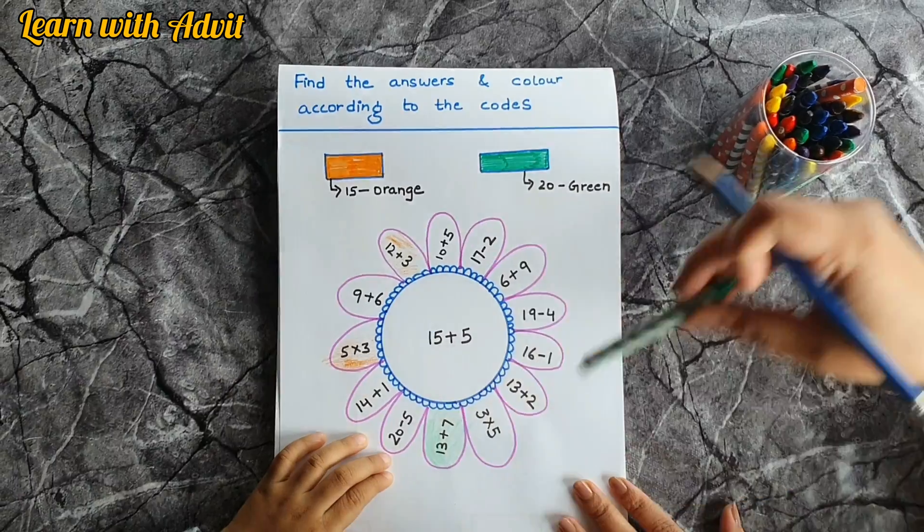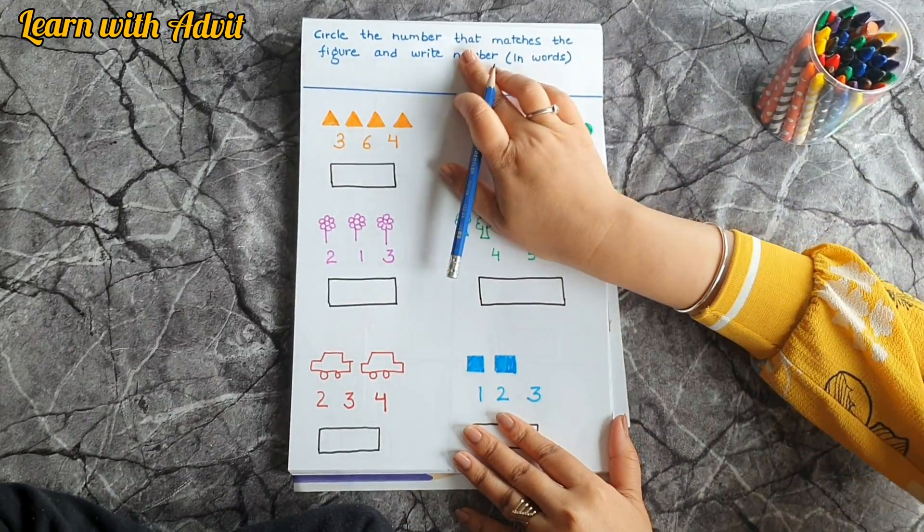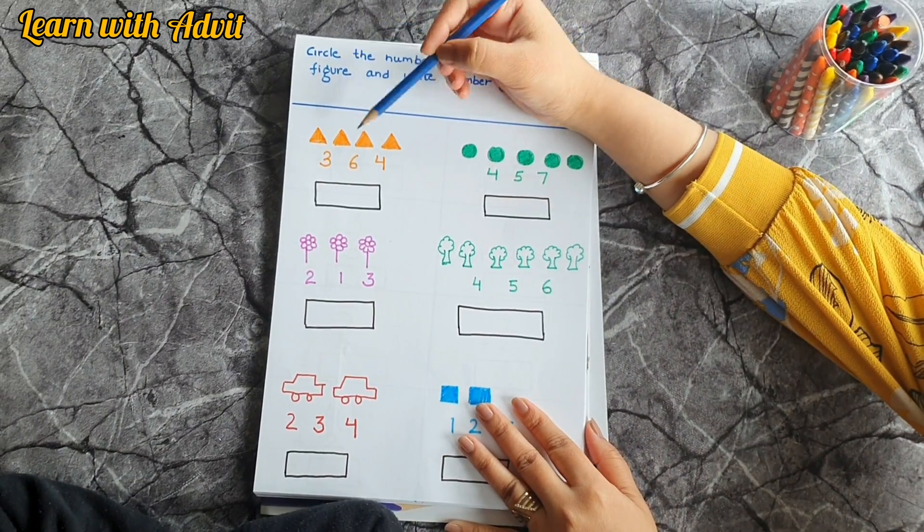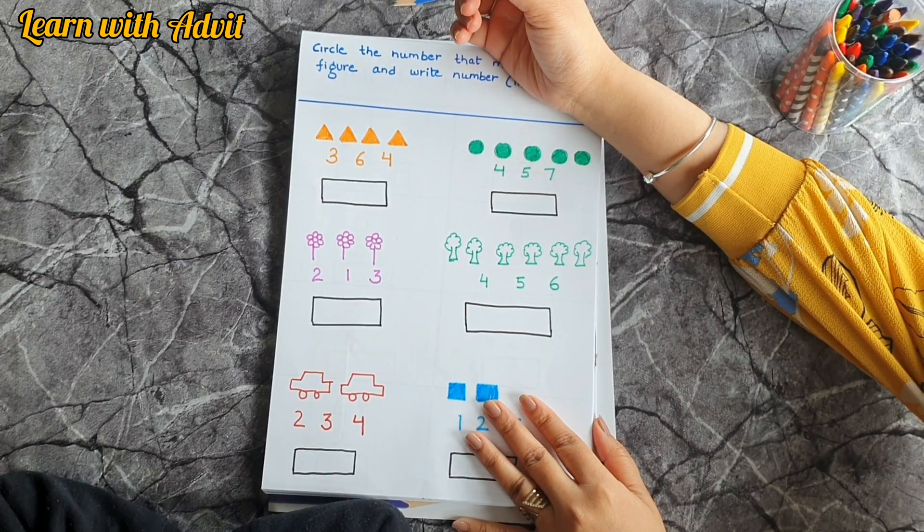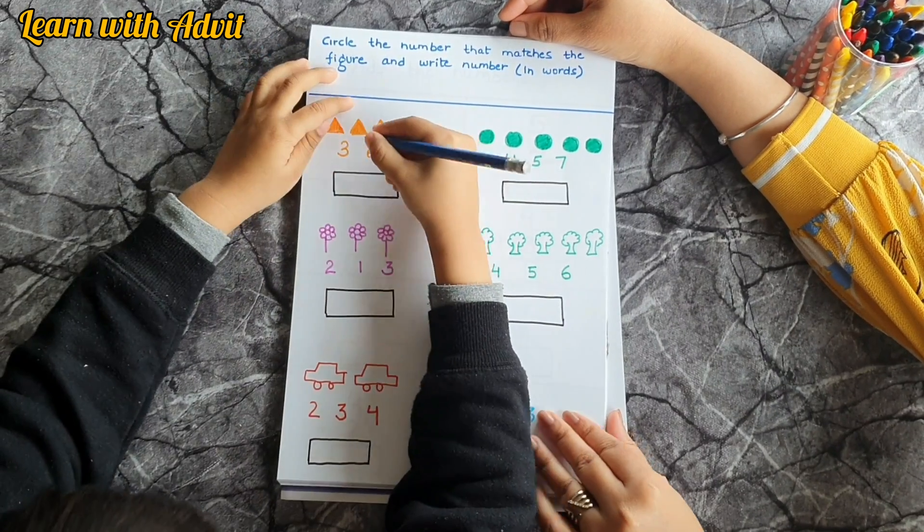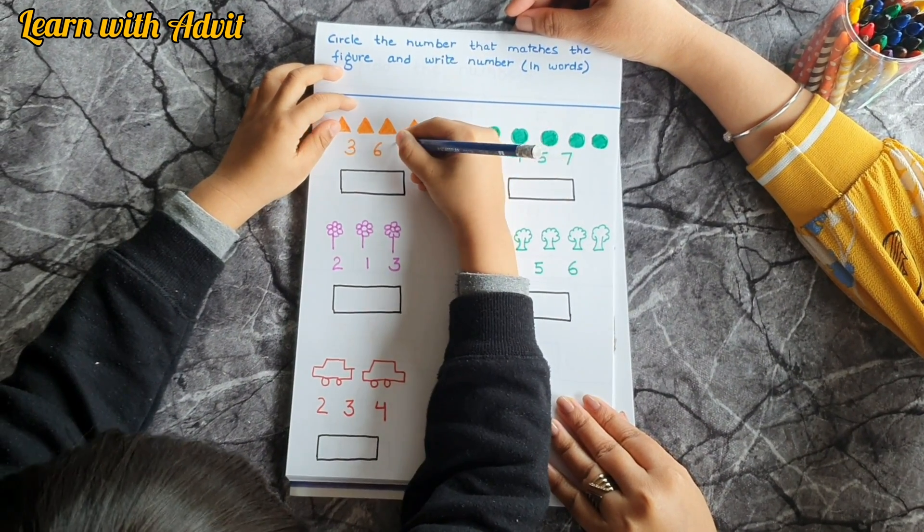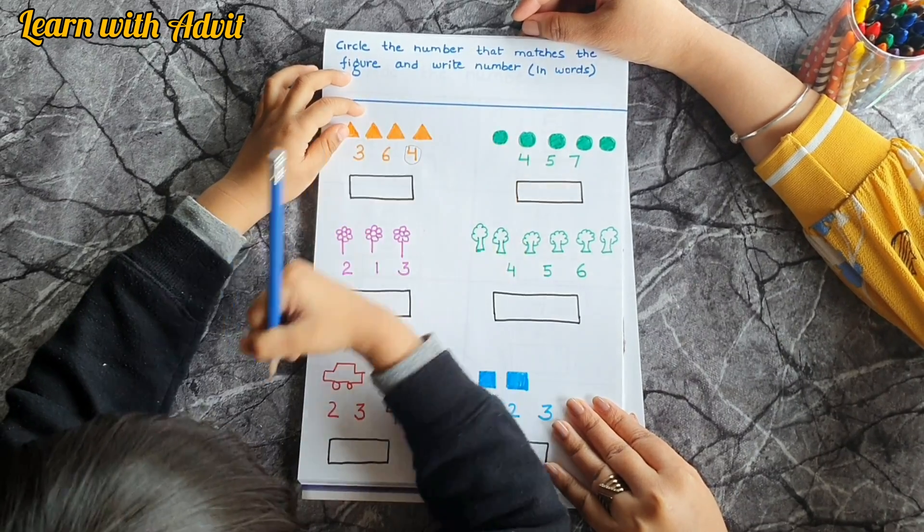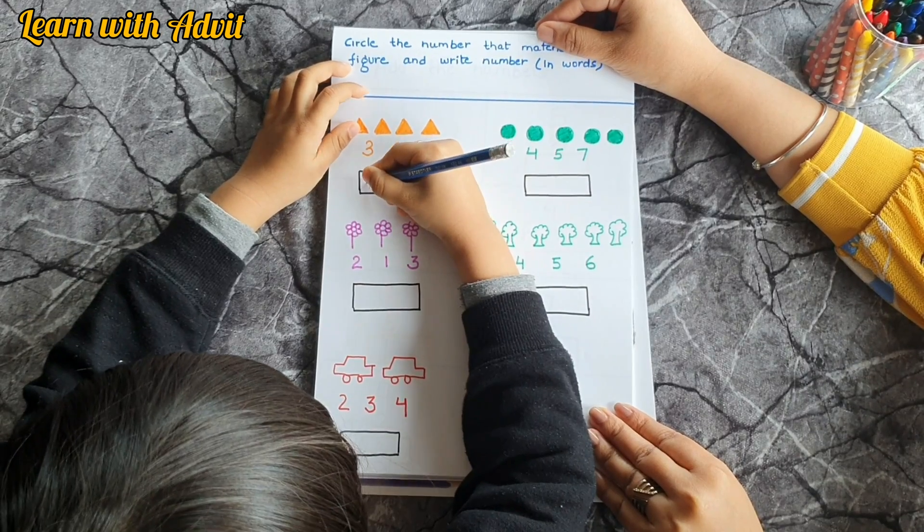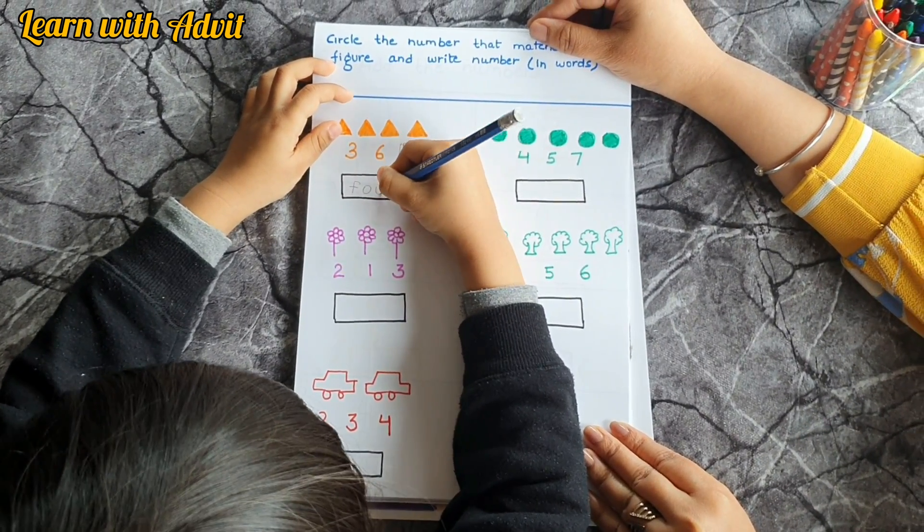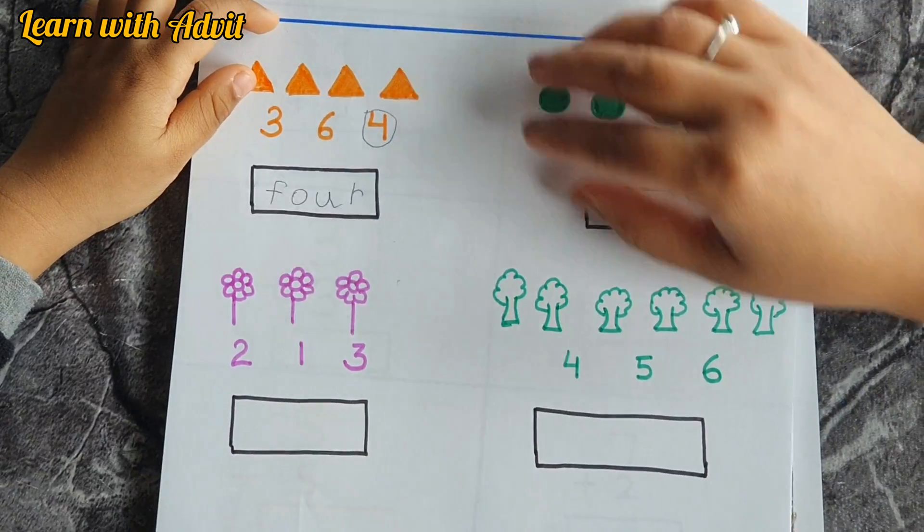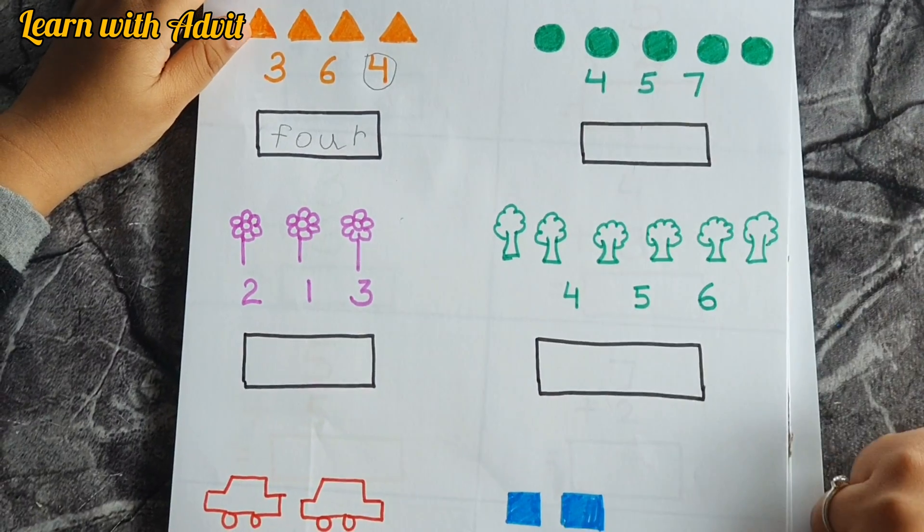So, sheet: circle the number that matches the figure and write the number in words. So you have to count first, how many triangles? It is four, four. So circle the correct number: three, six, four. So you have to write number four in words. Very good. Like this, you have to write all the numbers.